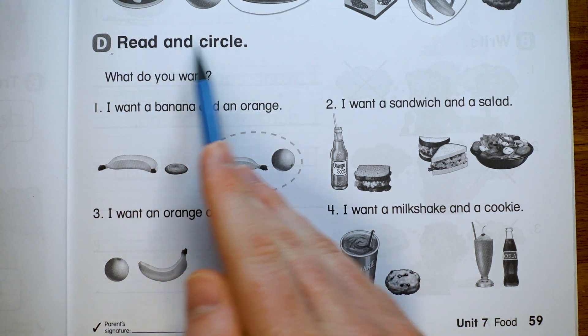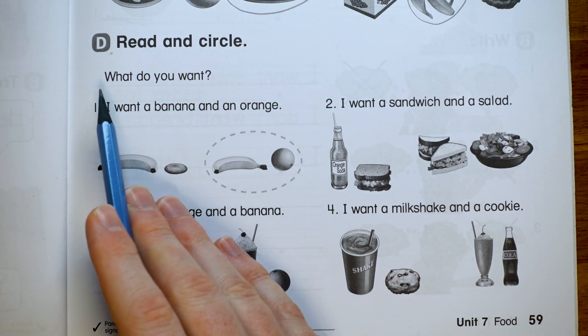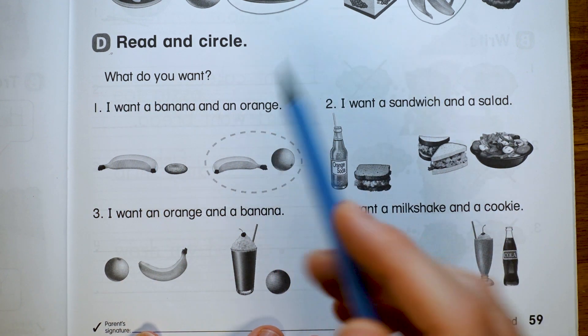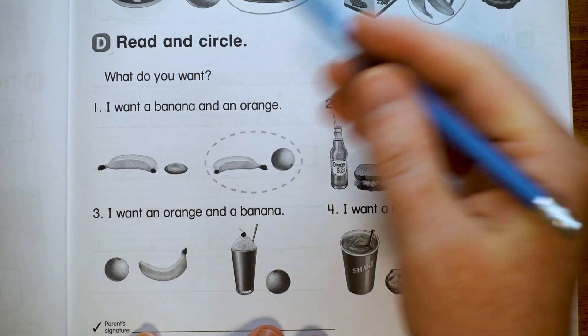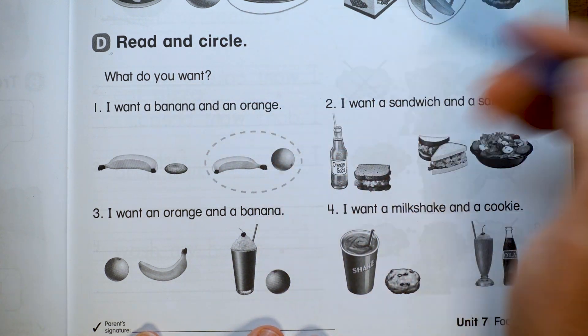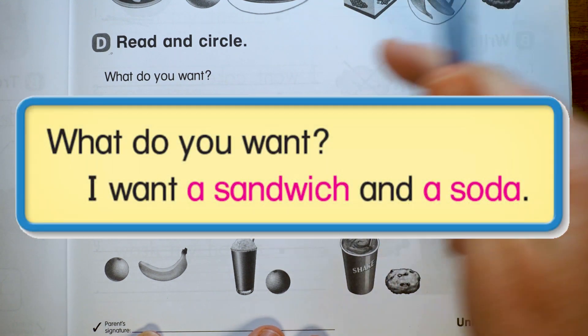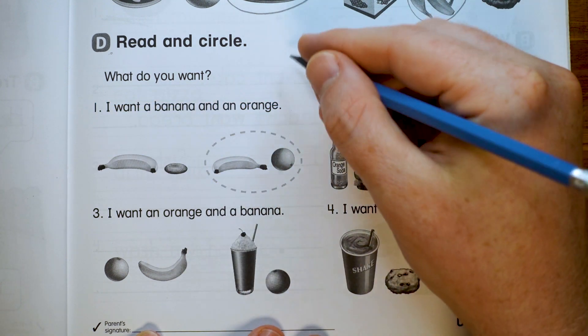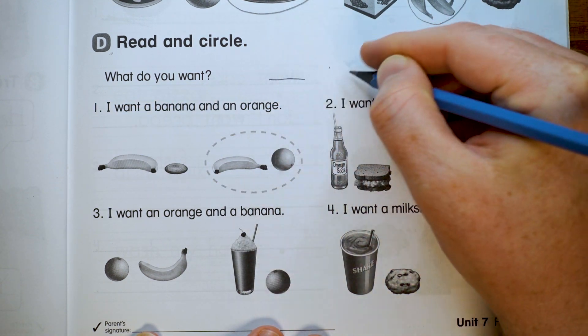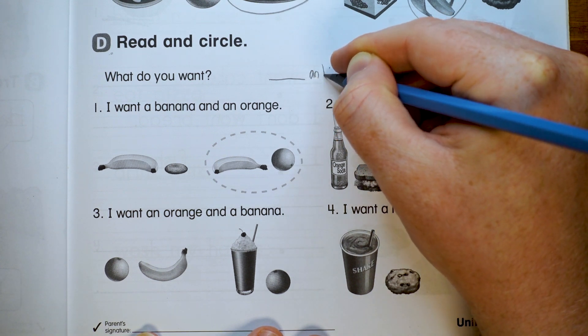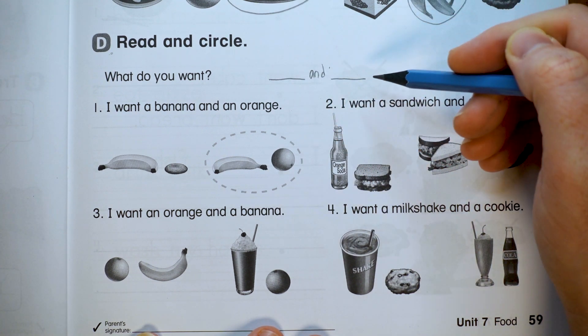And this is the last part for today. Part D. And it says, read and circle. So we have one question right here. What do you want? And then in our answers, they're giving us two things this time. I want a... and... In your student books it looked like this.